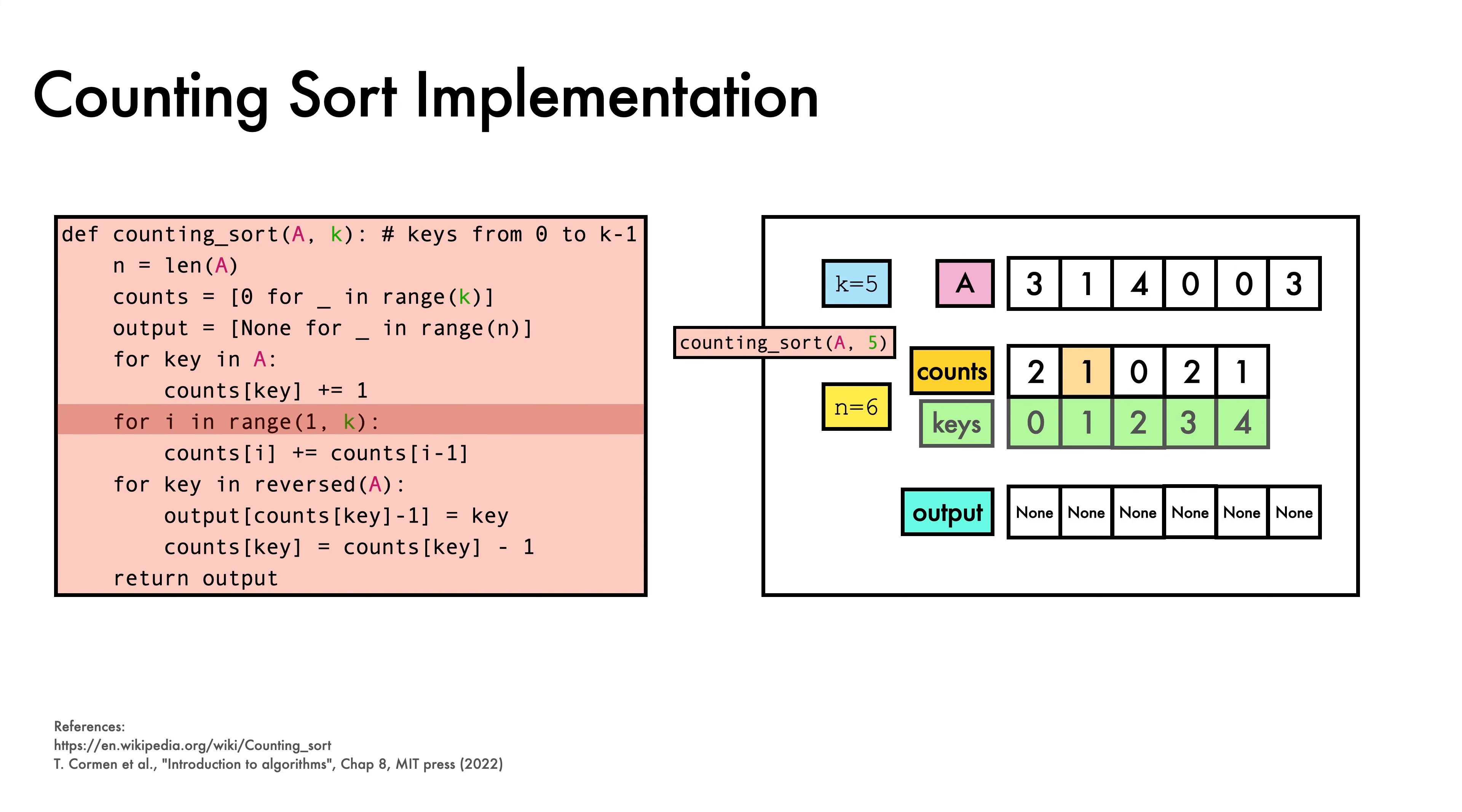Next, we begin our for loop over the counts array, starting at index 1, where we add the previous index to the current index. We move to index 2 and perform the same update. This process is then repeated for each of the remaining locations in the counts array.